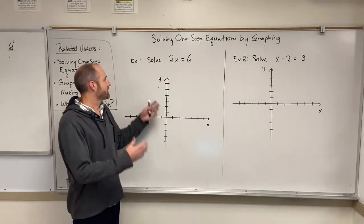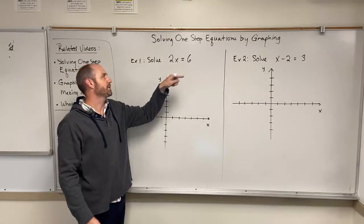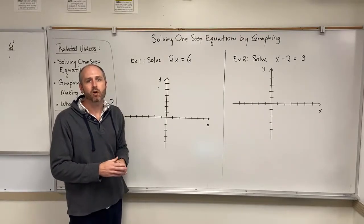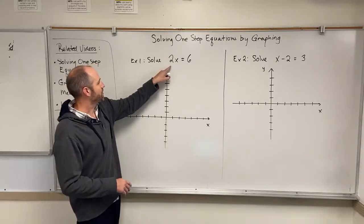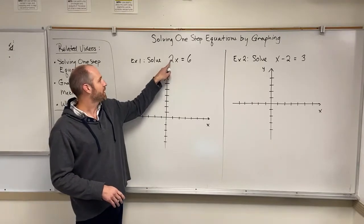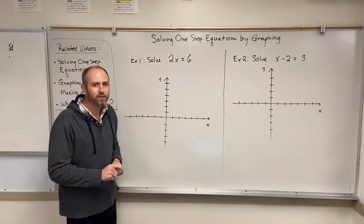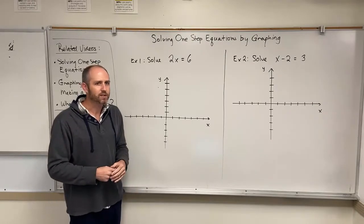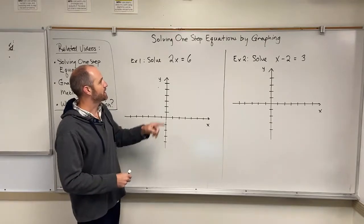Okay, so let's have a look — I have two examples for you today. Let's look at example one: we want to solve this one-step equation, 2x equals 6. The word 'solve' means find the value of the variable that makes the statement true. I already know that 3 is the value that makes the statement true — 2 times 3 equals 6. But I'm not really interested in the solution itself here; what I'm interested in is the method, and the method we're going to use is graphing.